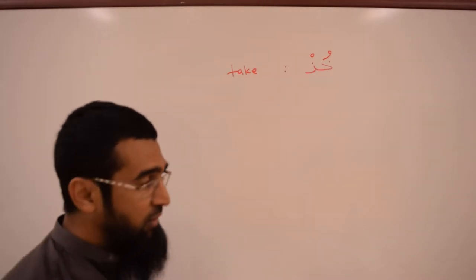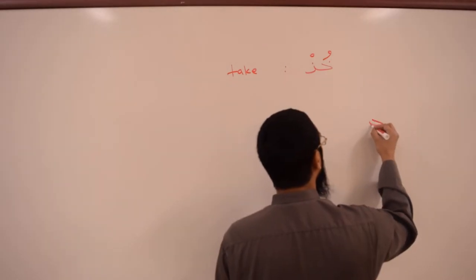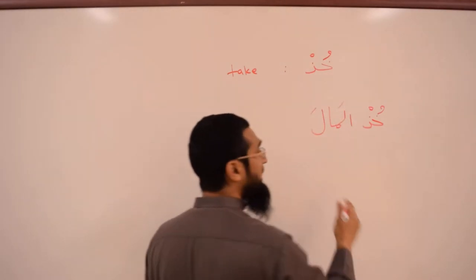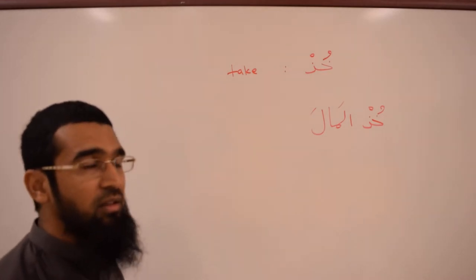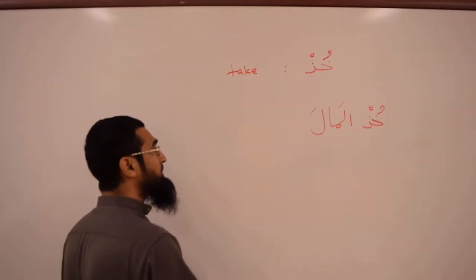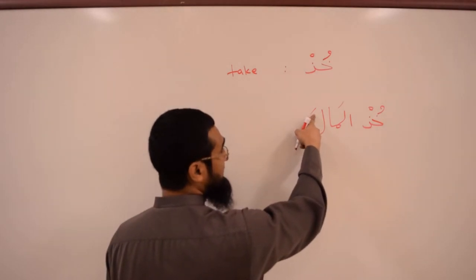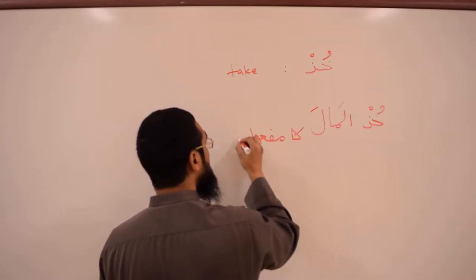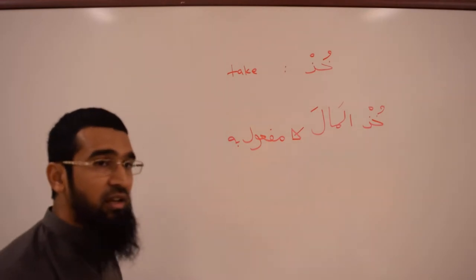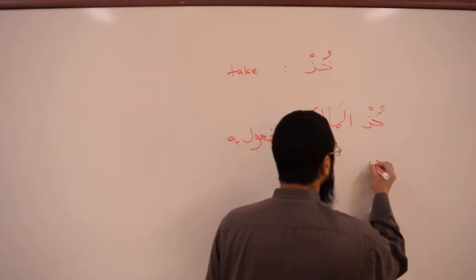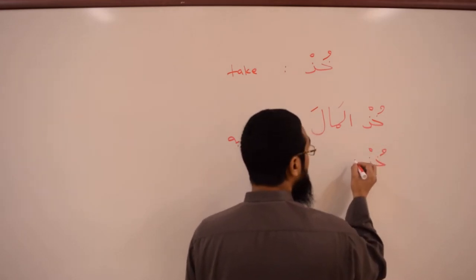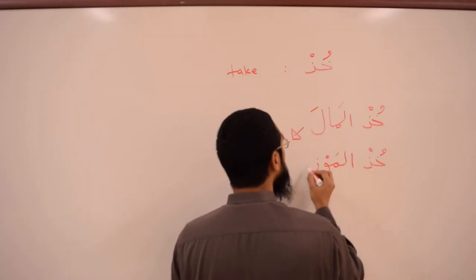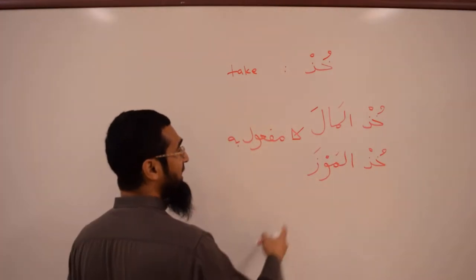For example: Khud al-mal — take the wealth. Notice it takes a fatha. Why? Because it is the maf'ulun bihi, and it is mansoob. Another example: Khud al-mawz — take the banana. Al-mawz is the maf'ulun bihi.